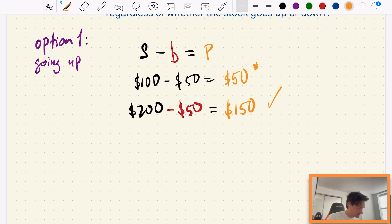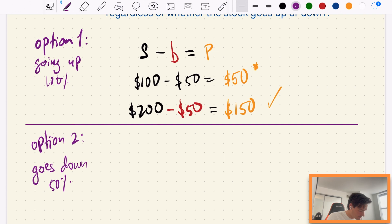Now option two is our stock goes down 50%, so this actually went up 100%. Let's just divide those two. So in this case our stock goes down so this becomes half of the original amount which was $100.